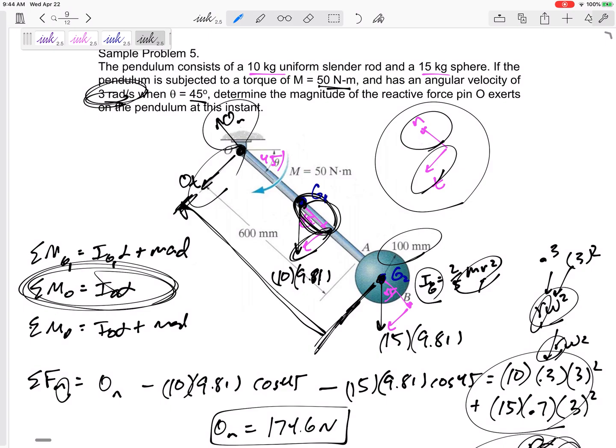And then sum of the forces equals MA, sum of the forces equals MA, sum of the moments equals I alpha. Problem number five requires a free body diagram.